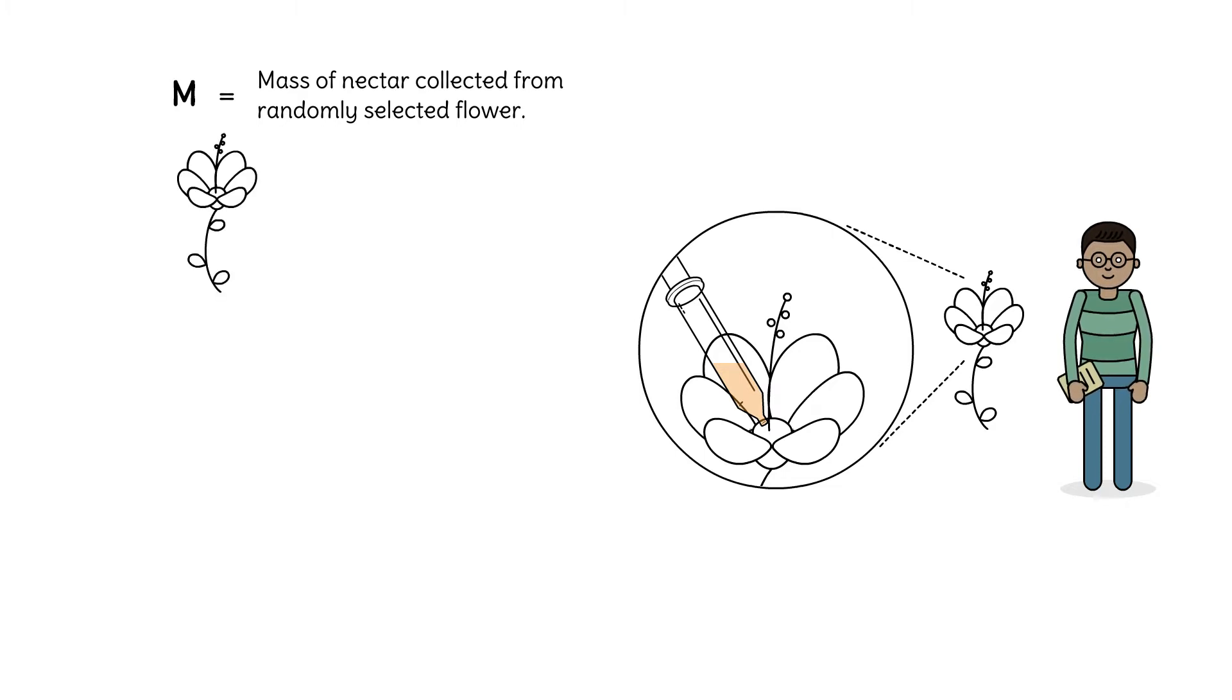Booker encounters his first flower, and the mass of the nectar is about 5.8 milligrams. For the next flower, the nectar has a mass of about 5.9 milligrams. So is this random variable discrete?